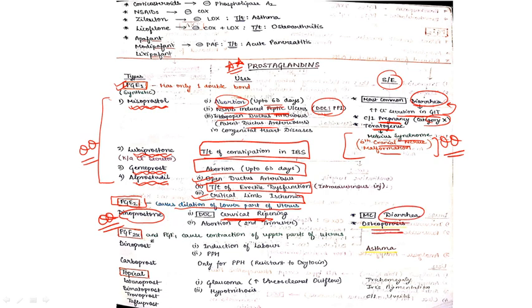Then PGF2 alpha and PGE1 both cause contraction of upper part of uterus. PGF2 alpha agonists are dinoprost and carboprost. Mind it: PGE2 is dinoprostone, PGF2 alpha is dinoprost and carboprost. Induction of labor and PGF2 alpha control PPH. The side effects associated with dinoprost and carboprost include asthma.